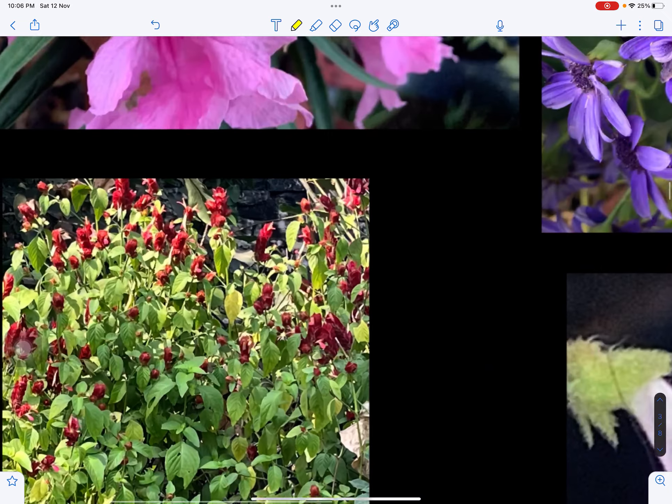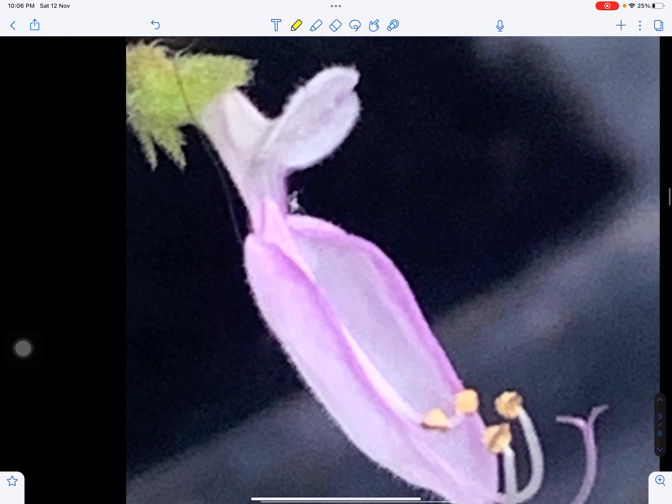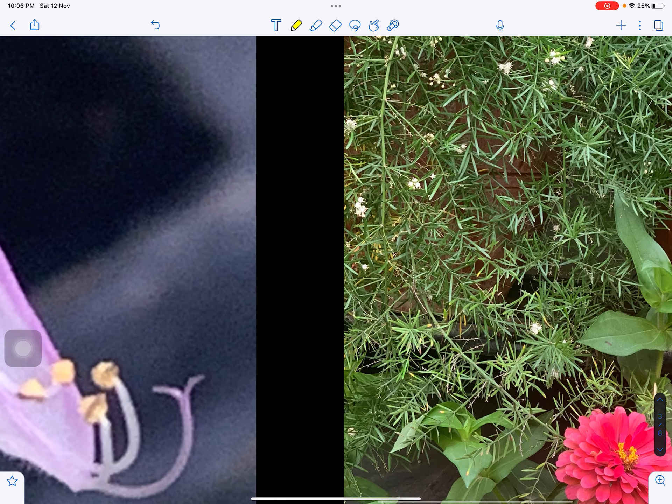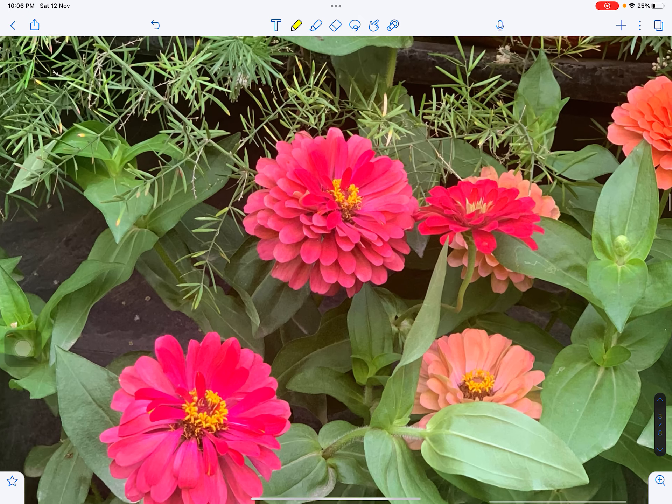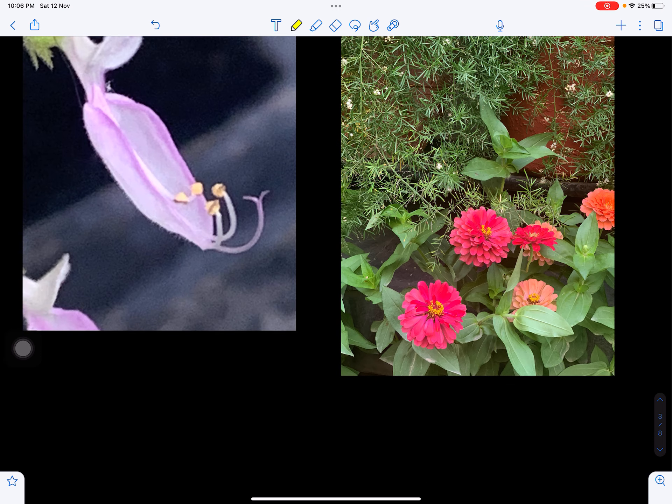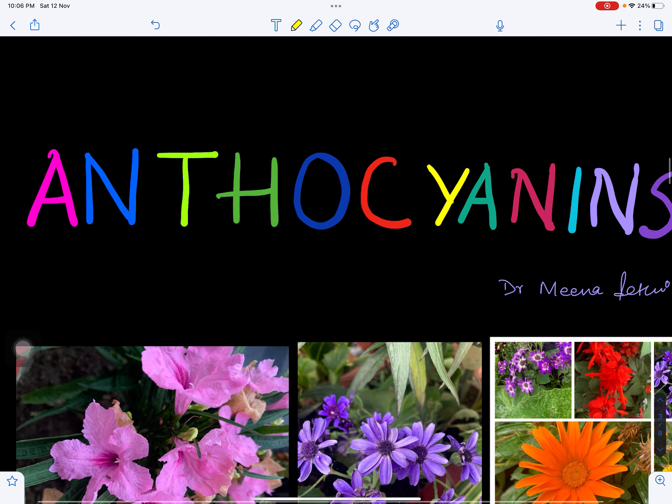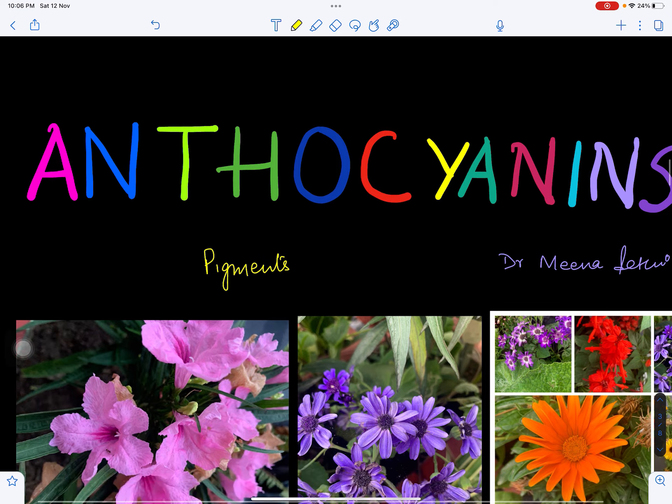Here again we can see red bracts in shrimp plant, then we can see here purple color, light purple flowers. We can see here zinnia of different colors, light orange, magenta. So there are different colors present in flowers and fruits.